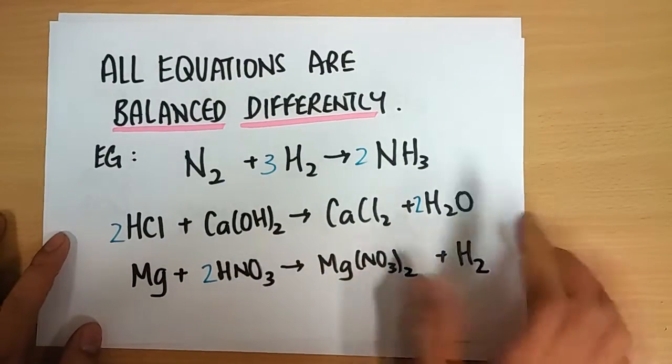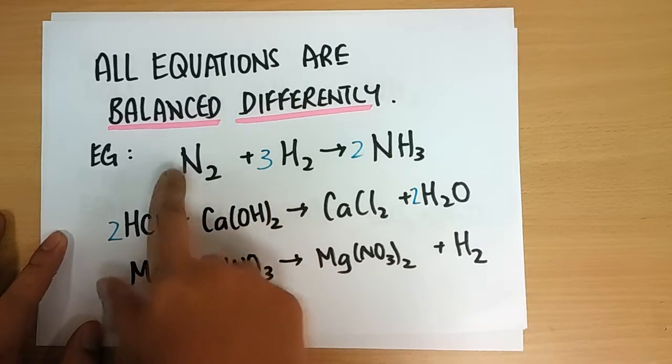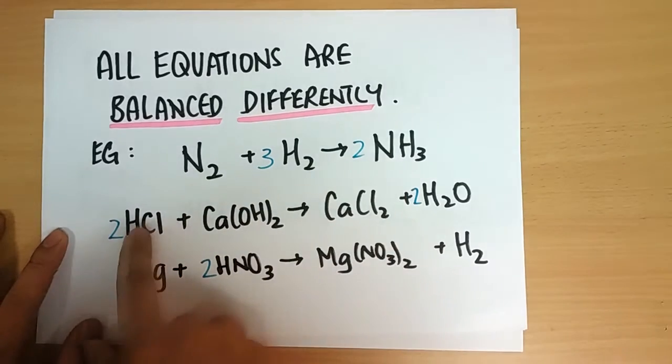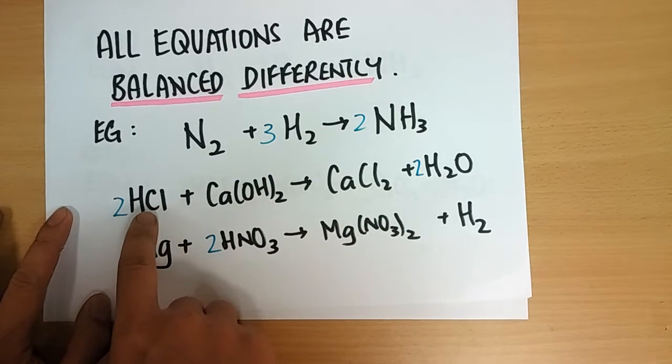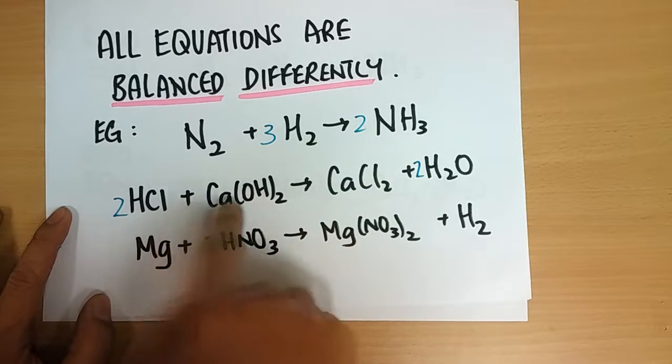All equations are balanced differently. For example, ammonia: 1 is to 3 is to 2. For the reaction of hydrochloric acid and calcium hydroxide, you have 2 is to 1 is to 1 is to 2. These are all balanced differently.